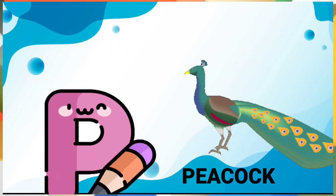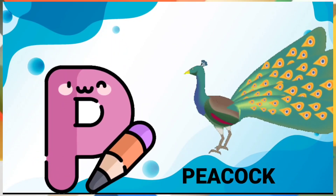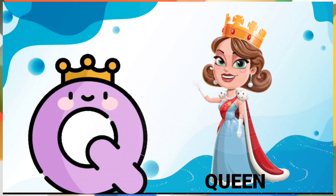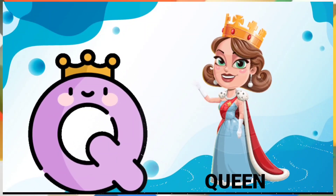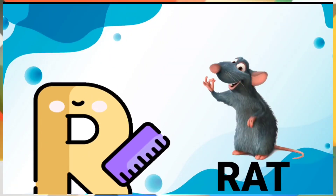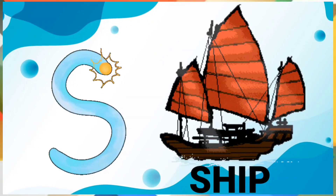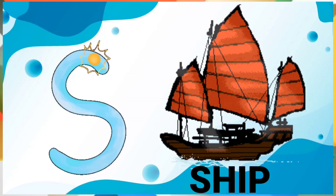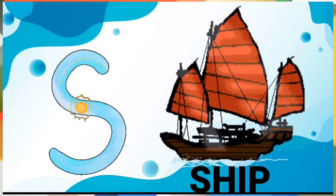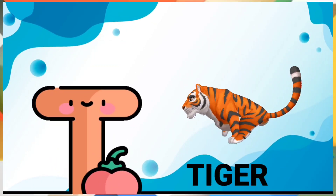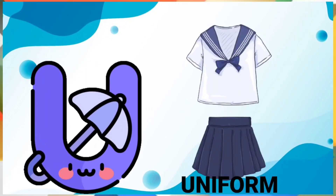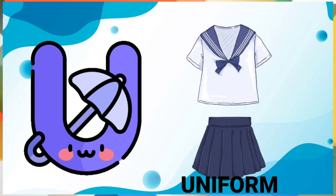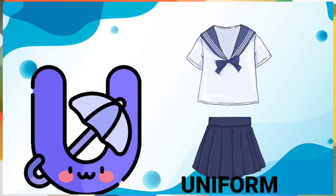B for peacock, Q for queen, R for rat, S for sheep, D for tiger, U for uniform.